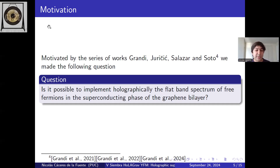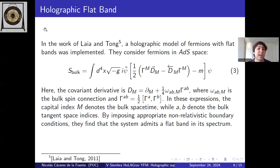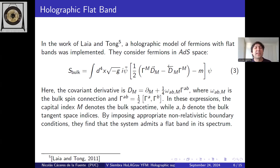This work, motivated by work of Nicolás Grandi, Javier Salazar and others, aims to holographically implement the flat band spectrum of the three fermions in the superconductive phase of twisted bilayer graphene using the bottom-up approach. We identify the basic symmetries and their breaking and implement these in the bulk theory by including the gauge field necessary for the symmetry breaking. To introduce temperature we use the black hole structure.